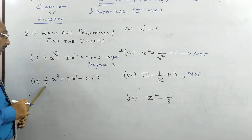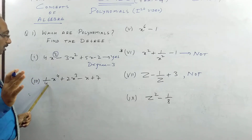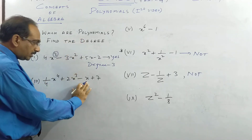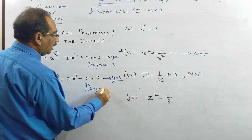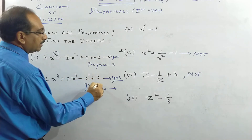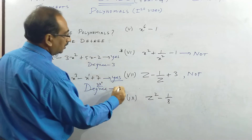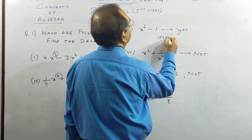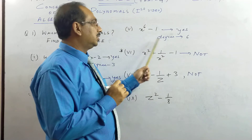For the expression with one-quarter: that is a constant — one-quarter has only the number 4 in the denominator, not a variable x, so it is a polynomial. The powers of x are 4, 3, 1, and 0 — you can write the constant as x to the power 0. The highest power is 4, so the degree is 4. The next expression is also a polynomial with x to the power 6, so its degree is 6.